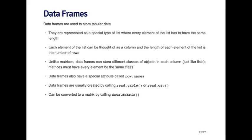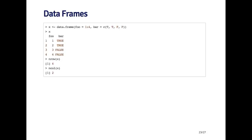You can also create a matrix from a data frame by calling the data.matrix function, though if the data frame has many different types of objects, coercing it to a matrix will force all objects to be the same type. You can also create data frames using the data.frame function. Here I've created a simple data frame where the foo variable is an integer sequence from one to four, and the bar variable is a logical vector with two trues and two falses. Printing it shows two columns, with row names defaulting to one, two, three, four.